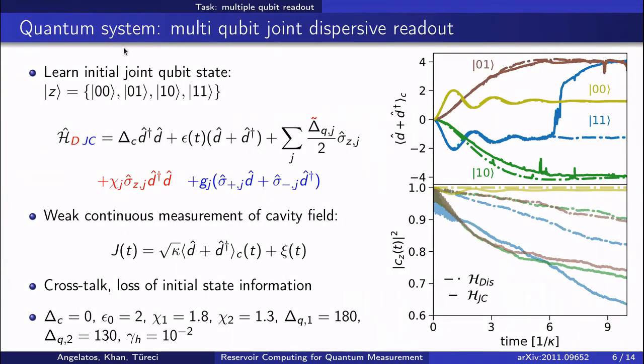The quantum system we will use to evaluate this reservoir processor is a multi-qubit joint dispersive readout setup, where we have a pair of qubits coupled to a common readout cavity, either through a Jaynes-Cummings or dispersive interaction. When the cavity is driven, its evolution will then depend on the initial qubit state, which can then be inferred from a homodyne measurement of the cavity.